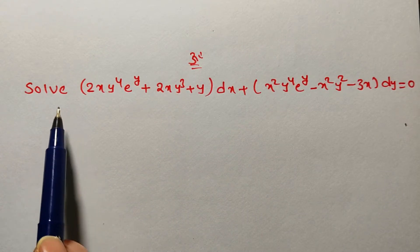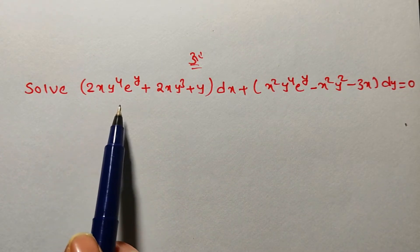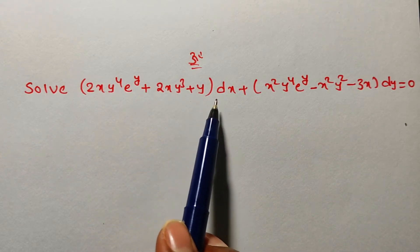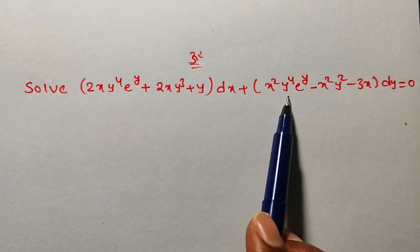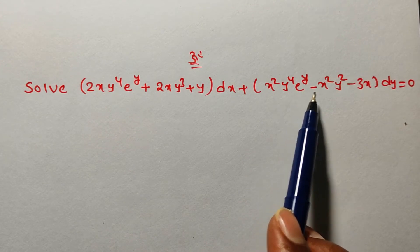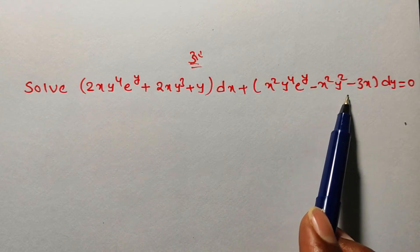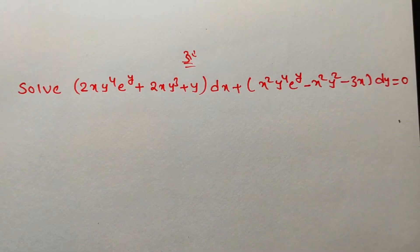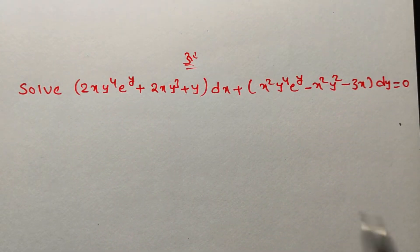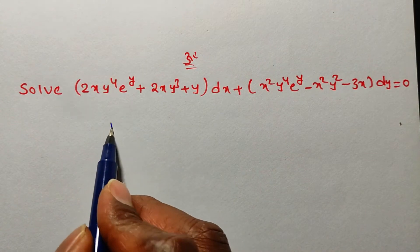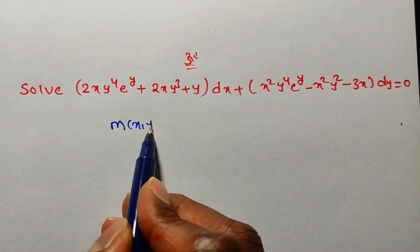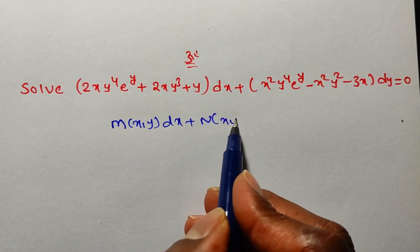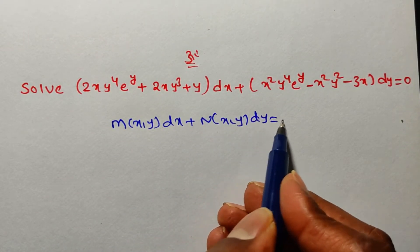The given problem is: solve (2xy⁴eʸ + 2xy³ + y)dx + (x²y⁴eʸ − x²y² − 3x)dy = 0. By observation, we can say the given problem is in the form of M(x,y)dx + N(x,y)dy = 0.